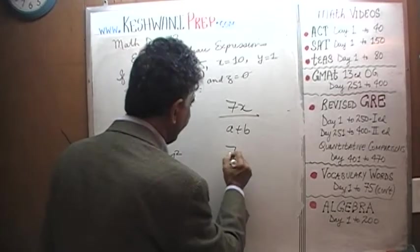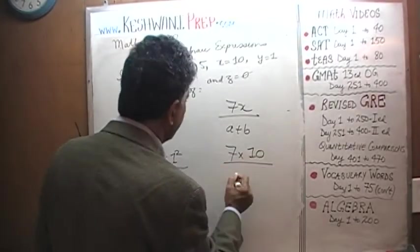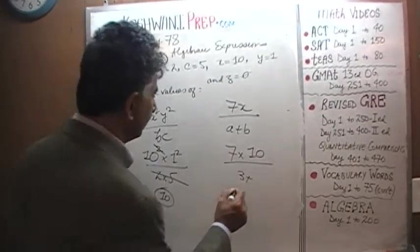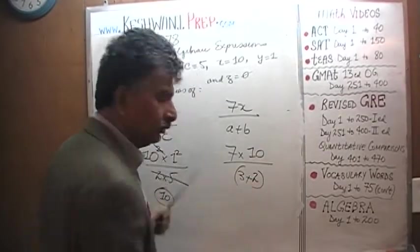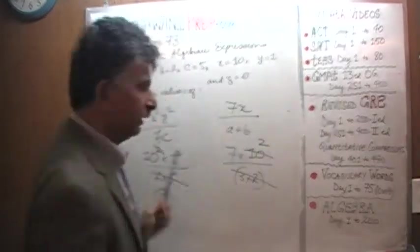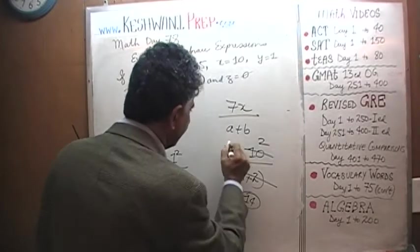7 times X which is 10 over A which is 3 plus B which is 2. 3 plus 2 of course is 5. Divide top and bottom by 5. 10 becomes 2. The answer is 14. This is 7 times 2.